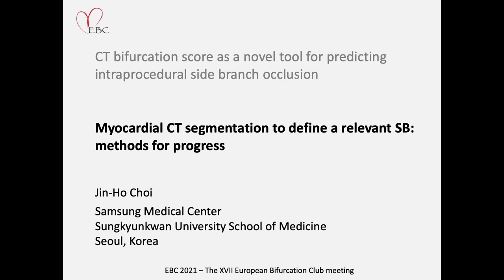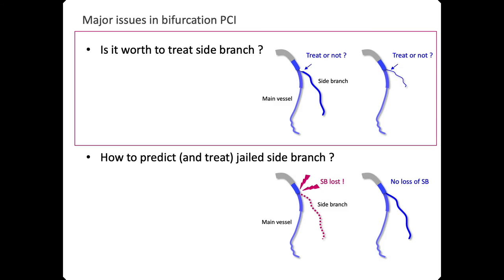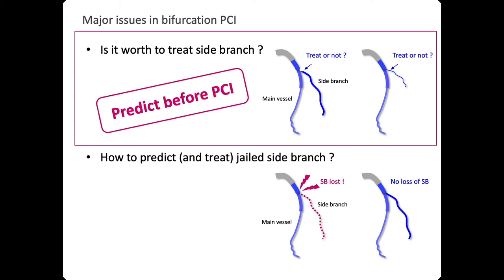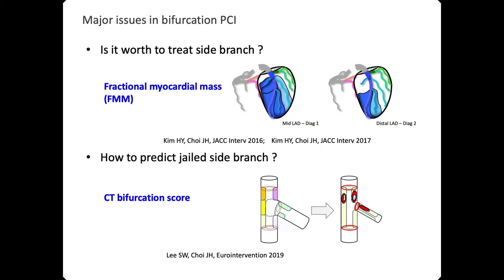We will now talk about side branch relevance according to MSCT evaluation pre-procedurally. Thank you for the invitation to present at EBC 2021. The title of my presentation is 'AI-Require CT Segmentation to Define a Relevant Side Branch — a Source for Progress.' I have nothing to disclose. There may be two major issues in bifurcation PCI: first, is it worth treating the side branch? Second, how to predict and treat a jailed side branch before PCI, not during or after ballooning. Translational myocardial mass — the amount of myocardium subtended by the vessel — and the CT bifurcation score may answer each question.